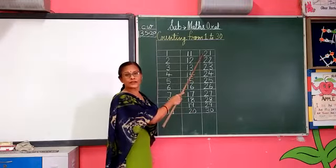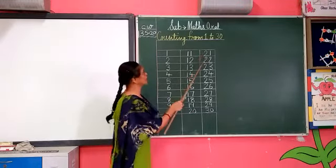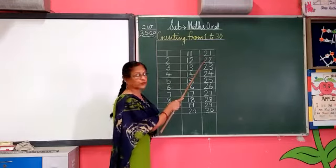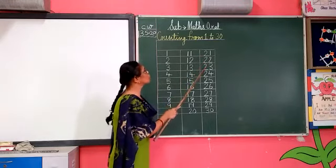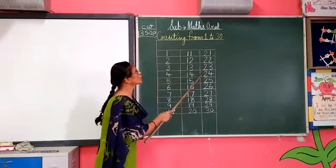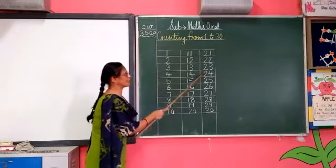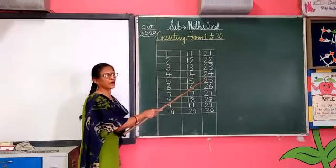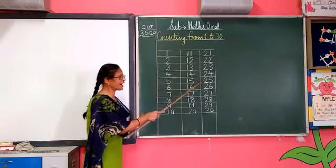2, 1 — 21. 2, 2 — 22. 2, 3 — 23. 2, 4 — 24. 2, 5 — 25.